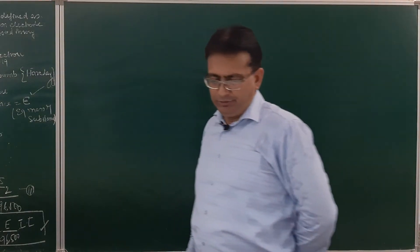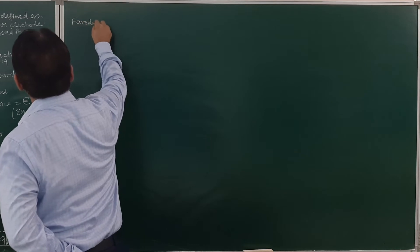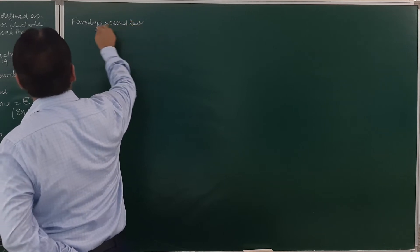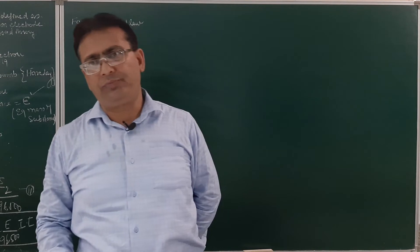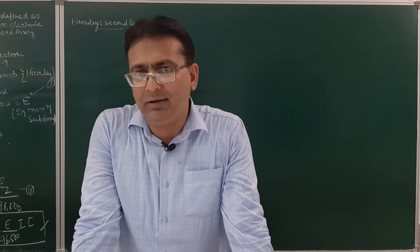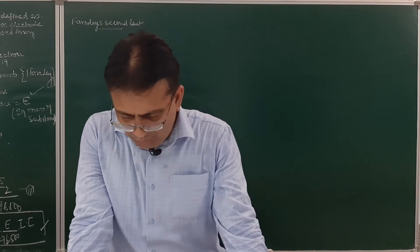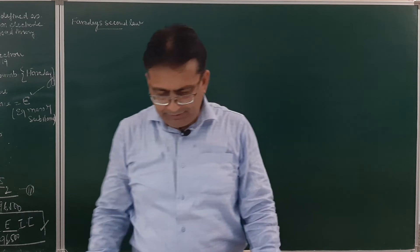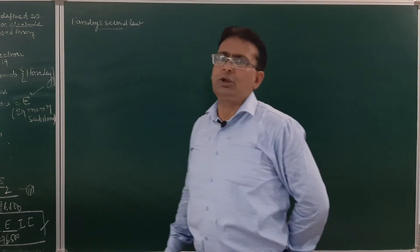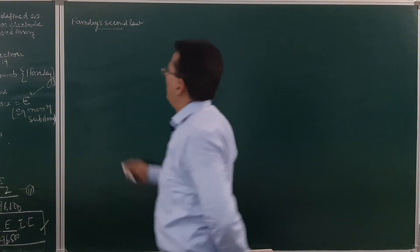Now let us discuss Faraday's second law. According to this law, if two or more electrolytic cells containing different electrolytes are connected in series, then the amount of substance liberated at an electrode during electrolysis will be directly proportional to their equivalent masses.